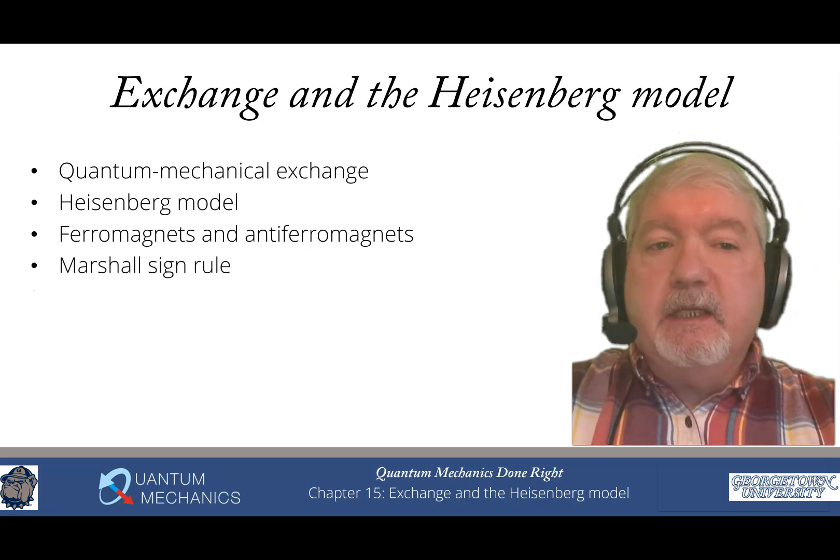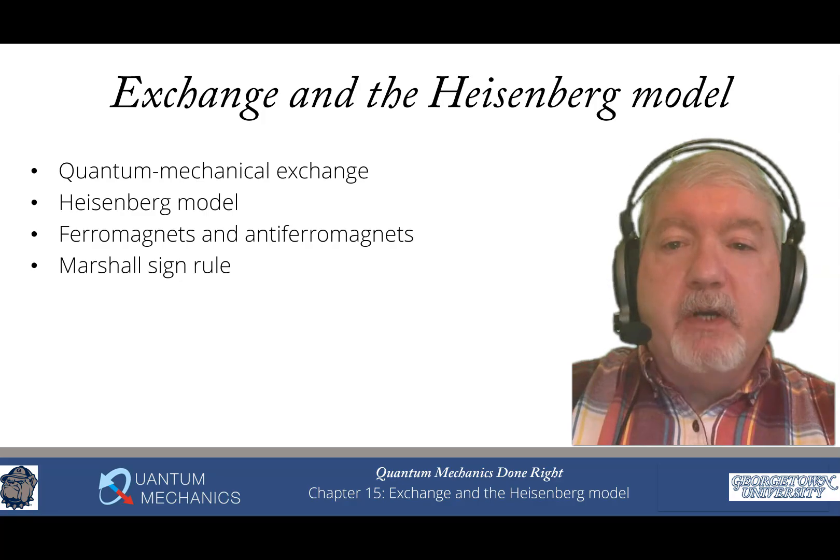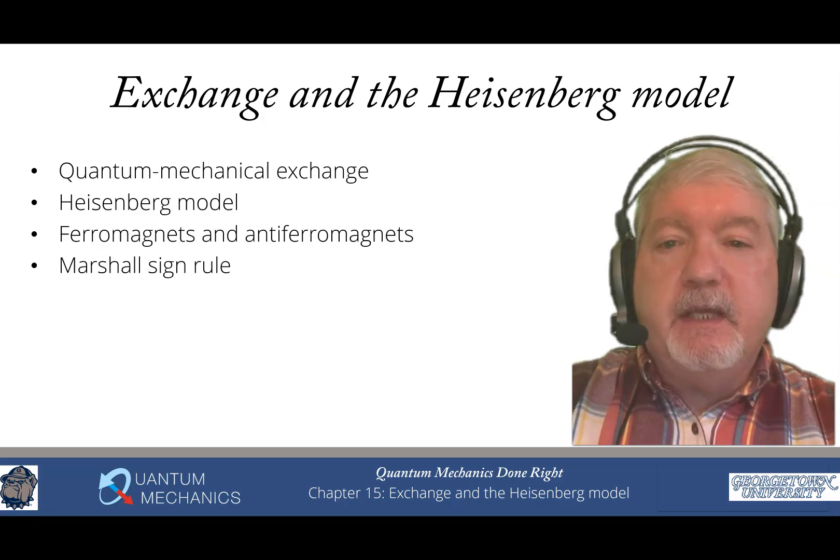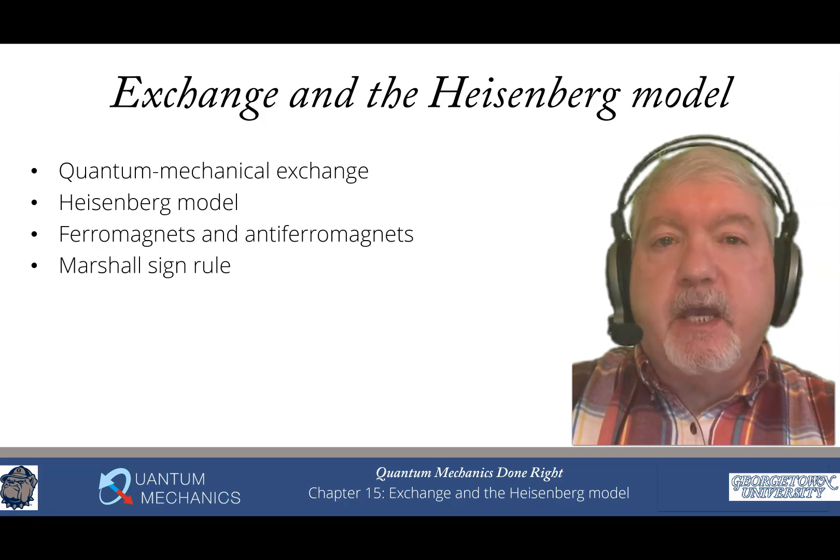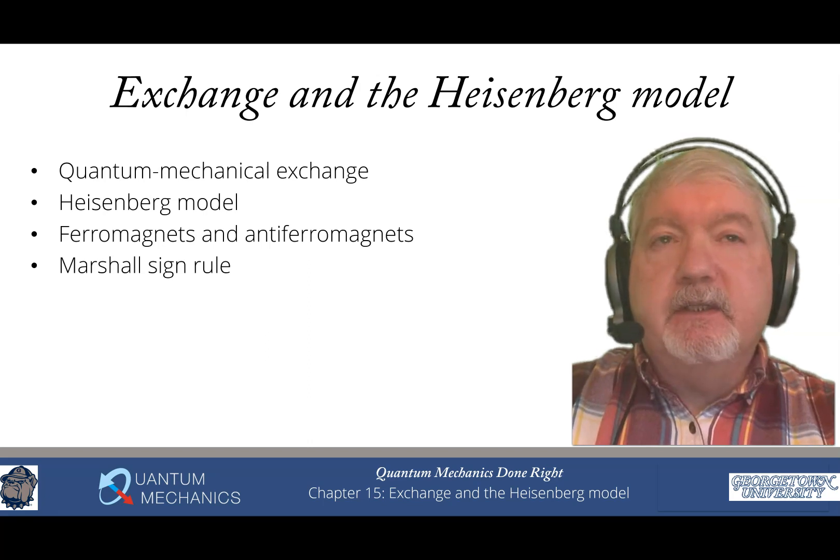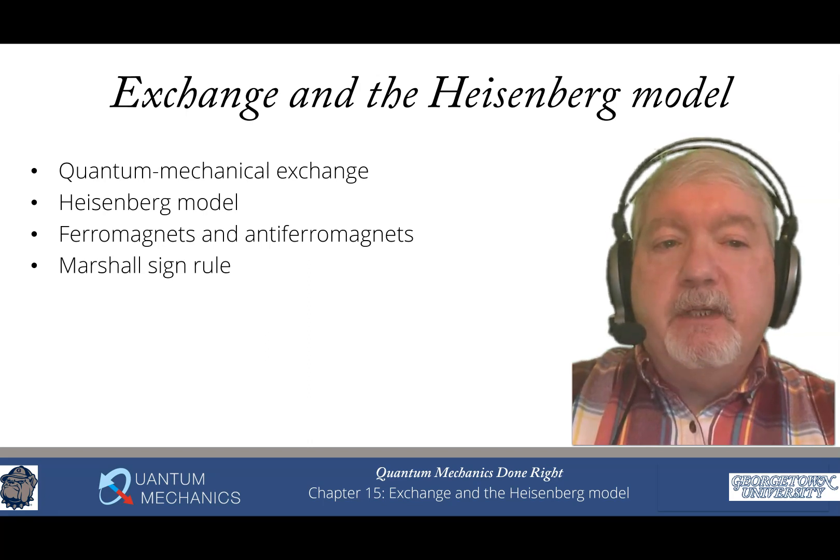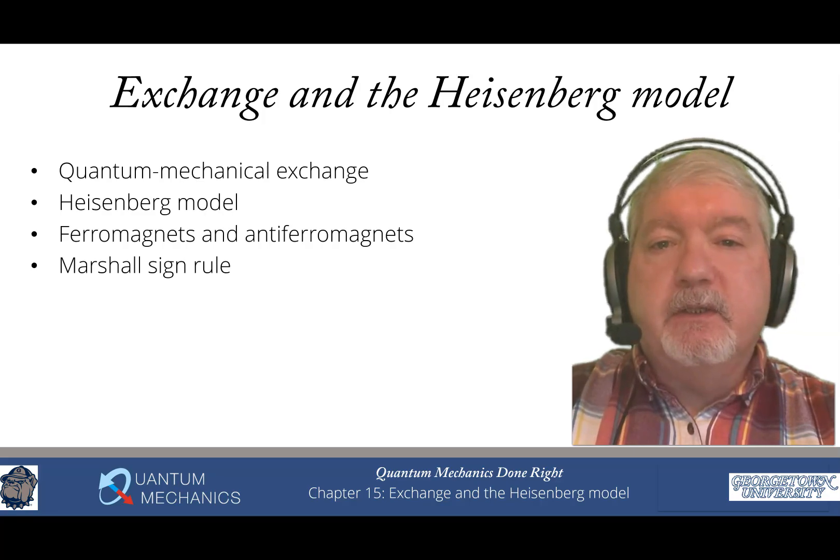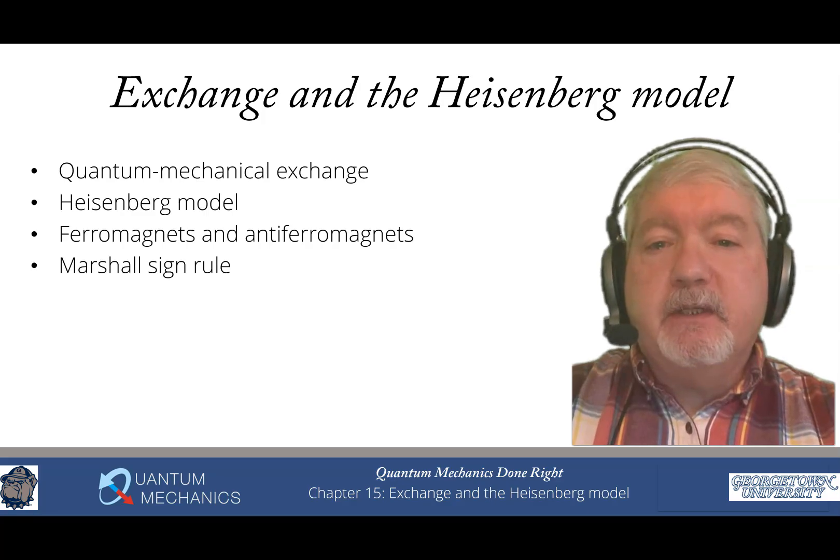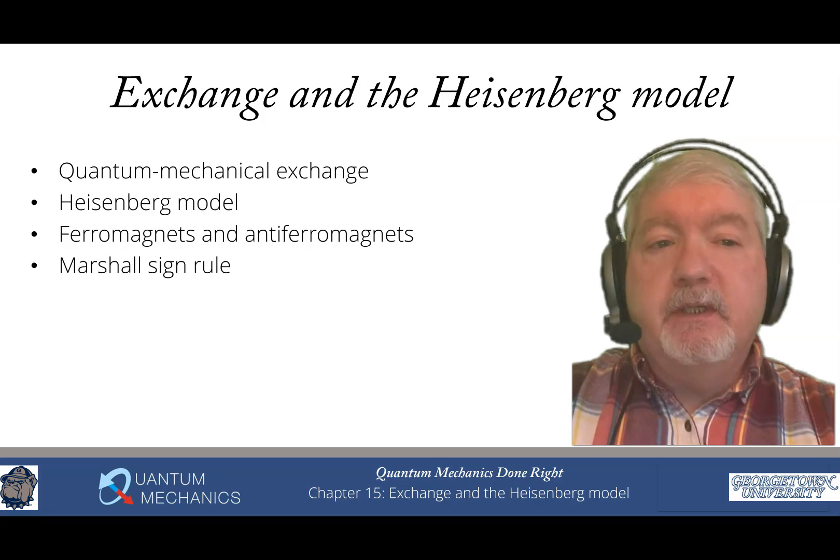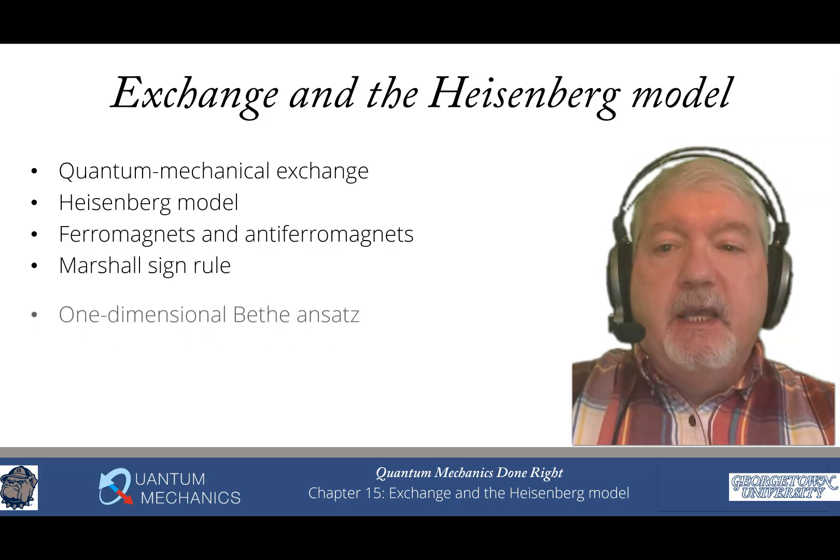There's an interesting exact result that was worked out by Marshall in the 1950s for the anti-ferromagnet that's called the Marshall sign rule. The Marshall sign rule allows us to determine certain properties about the solutions of the anti-ferromagnets. In particular, we can determine the net spin of the anti-ferromagnetic ground state by using the Marshall sign rule. And that's one of the topics we'll cover in a section in the chapter.